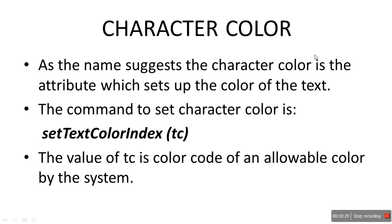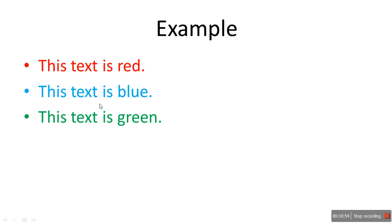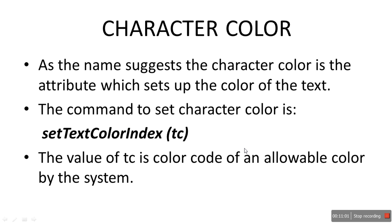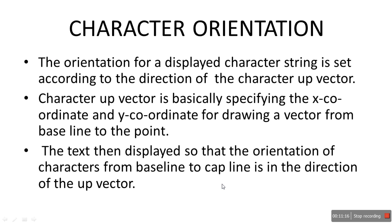Character color sets the color of the text. The command is set text color index, providing TC (text color). The value of TC is the color code of an allowable color on the system. For example, text can be in red, blue, or green. If a system is black and white, it won't allow colors other than black or gray — that's why only allowable color codes are executed.